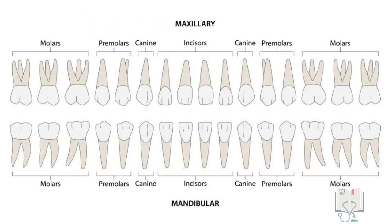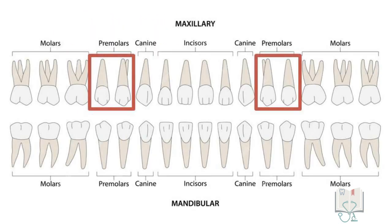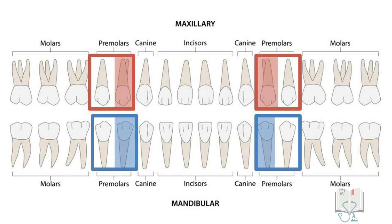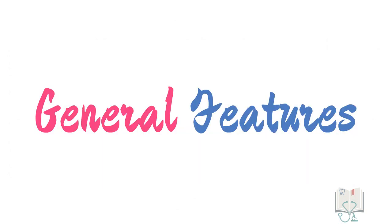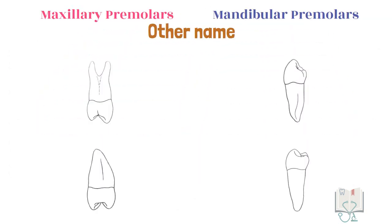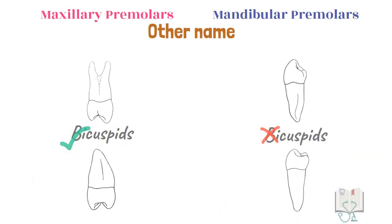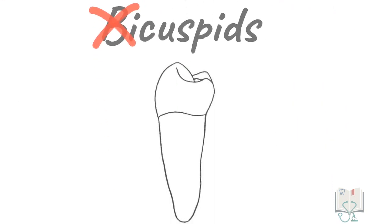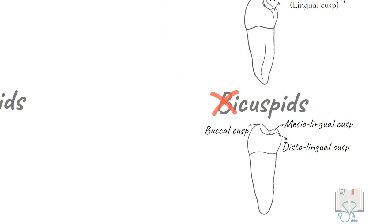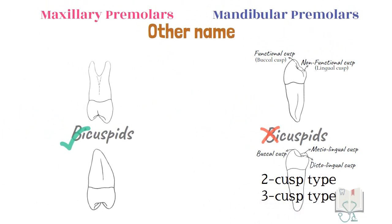Two pairs of premolars are present in both maxilla and mandible: first premolar and second premolar. Premolars are also known as bicuspids as they have two cusps. However, the term bicuspid is not ideal for mandibular premolars, as the first premolar has only one functional cusp and the second premolar more commonly has three cusps. In this video, we will be considering only the three-cusp type of mandibular second premolar.